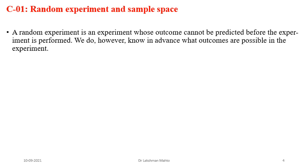A random experiment is an experiment whose outcome we cannot predict before the experiment is performed. However, we do know in advance what the possible outcomes are. That second sentence is very powerful: when performing a random experiment you must be aware of what the possibilities are, but you are not aware of what will actually come. We know all possible outcomes — that property we call exhaustiveness — but we don't know which will occur. You are not God, so you can't predict what will come.